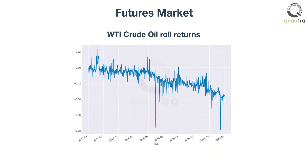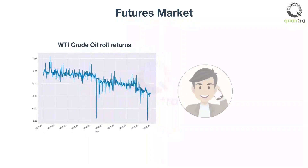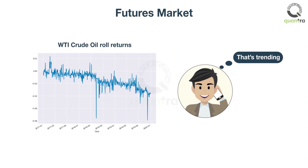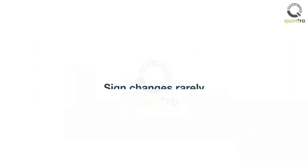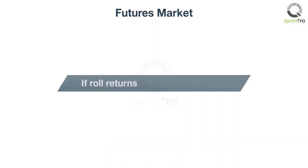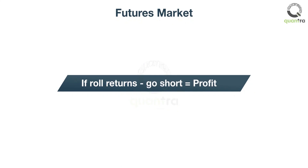Momentum trading is very prevalent in the futures market, and many commodities traders are trend followers. This is due to persistence of roll returns. In the futures market, the roll return is the difference between futures returns and spot returns. For a long period of time, the sign of roll returns does not change. So if roll returns are positive, you simply long it and profit from it, and similarly, if the roll returns are negative, you can short it.